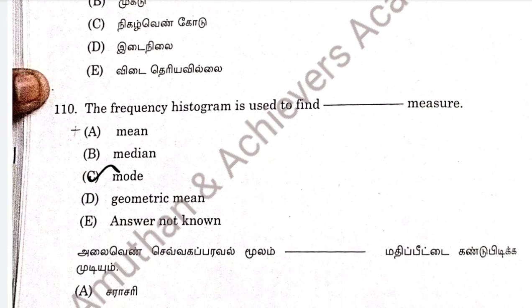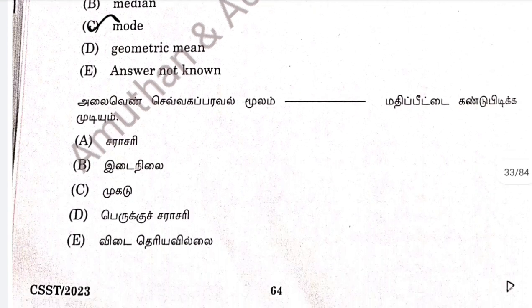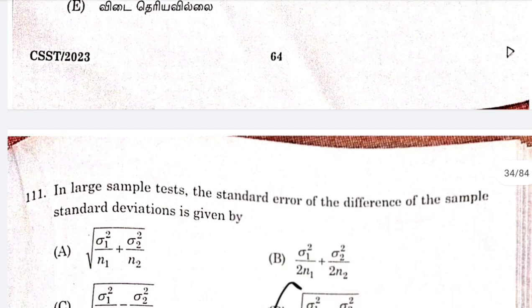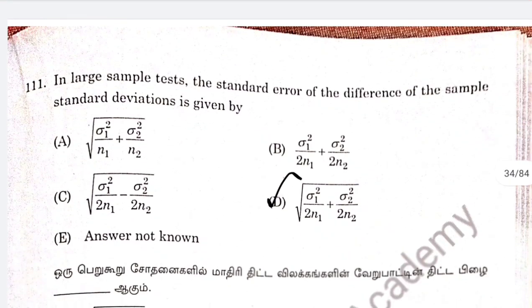Question 110: the frequency histogram is used to find the mode. Question 111, this is a very standard and repeated question: the standard error of the difference of the sample standard deviations. Option D is correct.